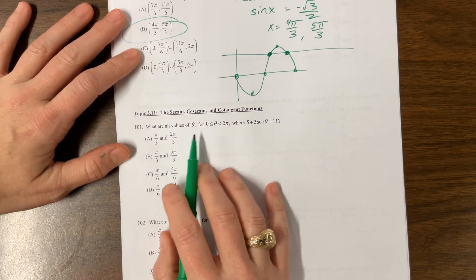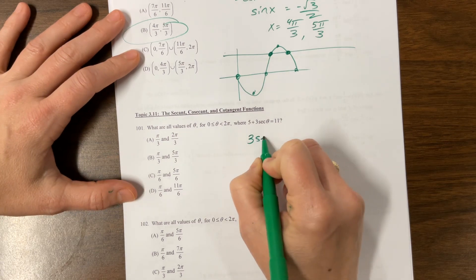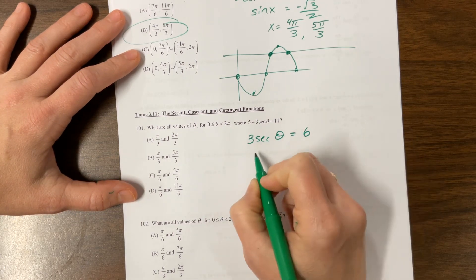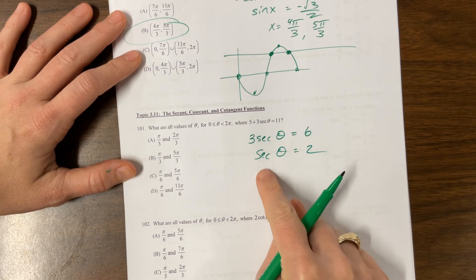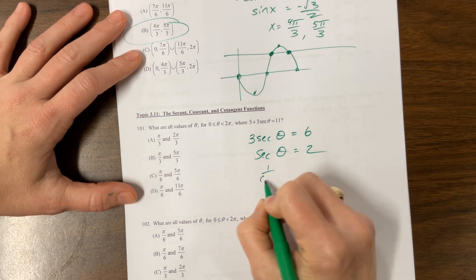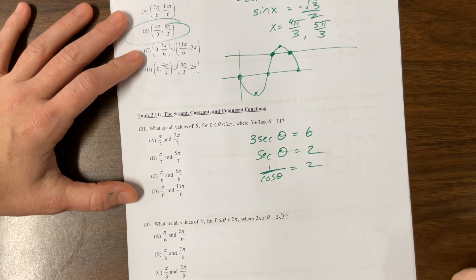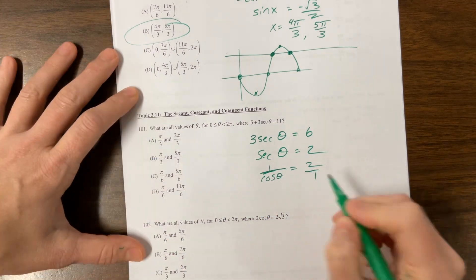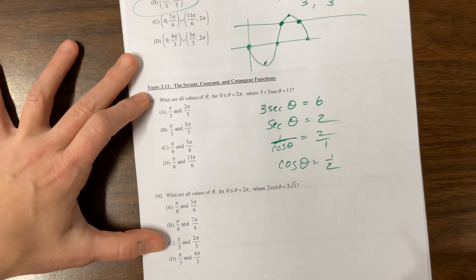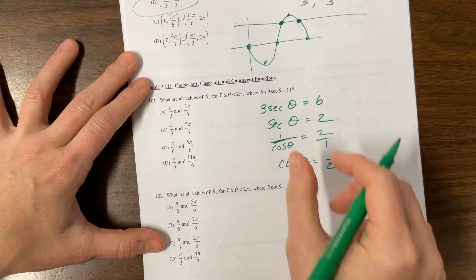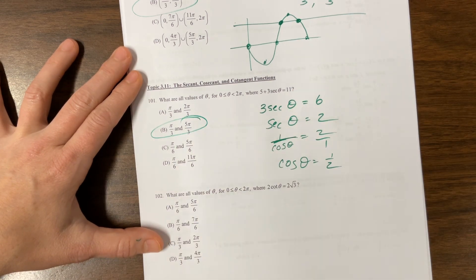What are the values of theta for this? We're going to say 3 secant of theta is equal to 6 divided by 3. Secant is cosine's buddy, so this is 1 over cosine of theta equals 2. I can take the reciprocal of each side or cross-multiply. Basically we're saying when does cosine equal 1 half? Cosine equals 1 half at pi over 3 and at 5 pi over 3.